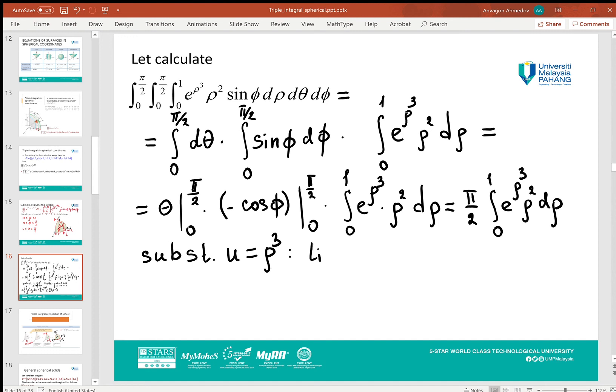So here, in the last integral, I do substitution u equals ρ³, and if I find the limits for u, when ρ is 0, u is 0; when ρ is 1, u is 1. Then I change du with 3ρ² dρ.